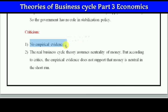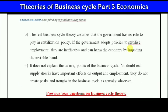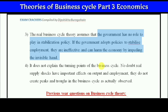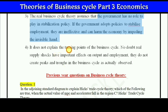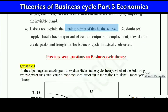Criticism of RBC: there is no empirical evidence — it is just a theory. Real business cycle assumes neutrality of money, but according to empirical evidence, money is not neutral in the short run. RBC theory assumes no governmental role, but there is already proof that government-adopted policies are more effective according to some economists. Furthermore, RBC does not explain the turning points of the business cycle — boom, recovery, recession, and depression are not adequately explained by real variables alone.